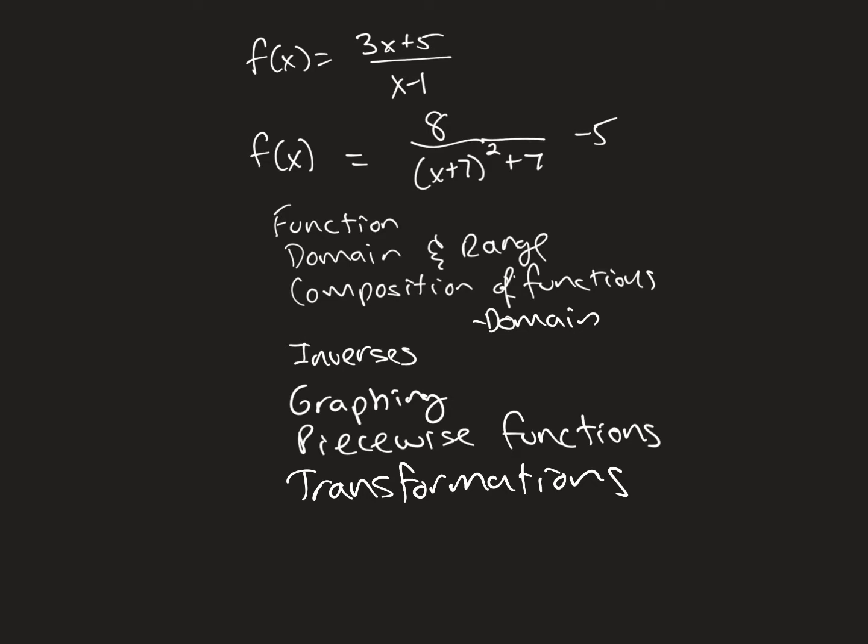With transformations, remember transformations within the domain, we're talking about reverse order of operations, whereas range transformations, it's the order of operations. There were a bunch of problems related to that: here's a graph, perform the given transformation; here's a point, where does the point go given the transformation; what's the new domain and range. In particular, what was hard for people was transformations involving absolute value.